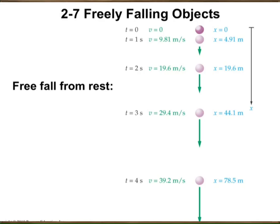Gravitational acceleration does not depend on the mass of the object. Whenever you release two objects which have different sizes or masses, they will fall down with the same acceleration. Of course, there is always air friction, but if you release heavier objects like rocks, you can ignore the air friction. If you ignore the air friction, the gravitational acceleration is the same for all objects regardless of their masses.